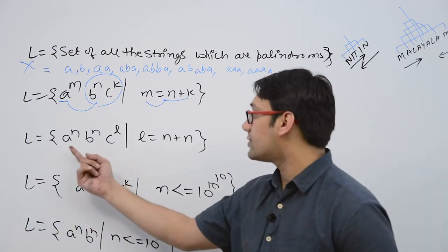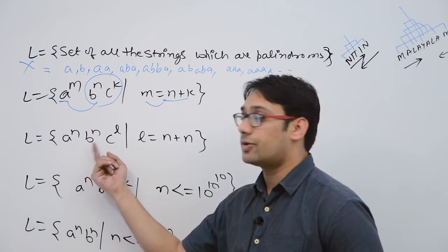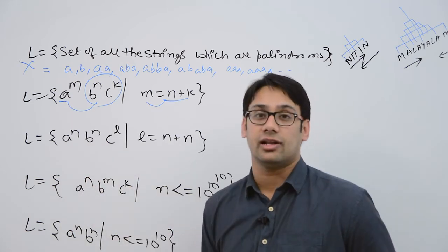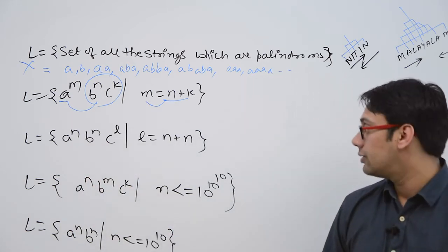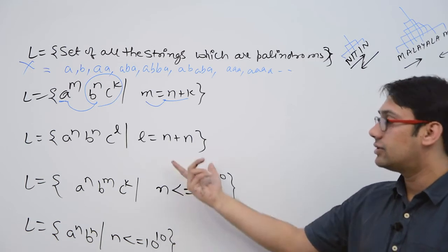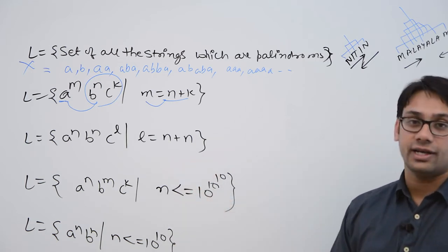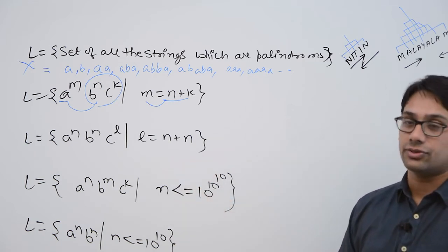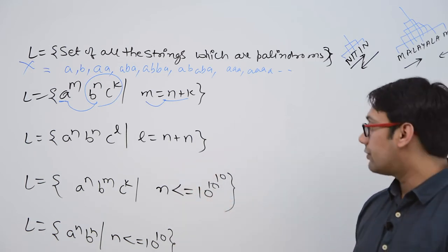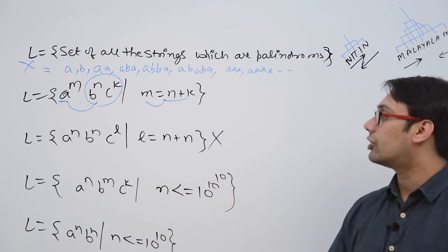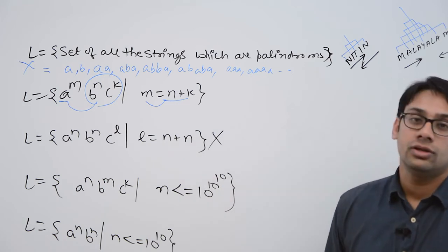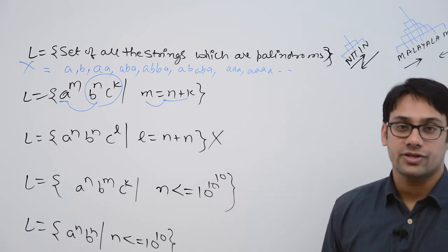Another language is a raised to the power n, b raised to the power n, c raised to the power n, where the count of a's and b's should be exactly the same. This is an infinite language, so for this, finite automata is not possible, and therefore you cannot make a regular expression.